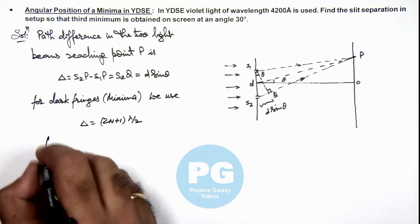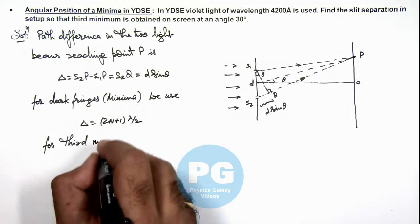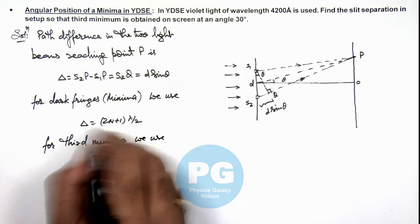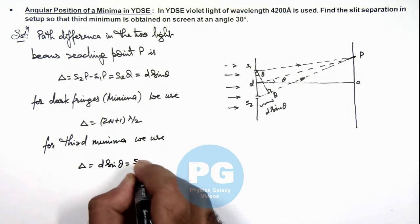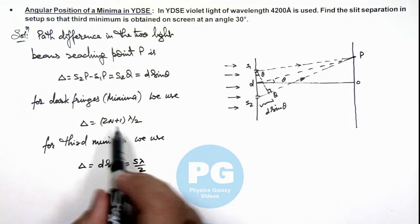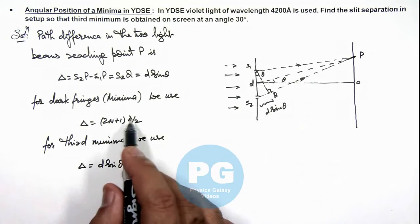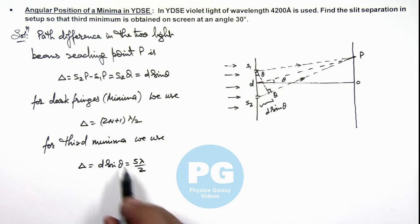And for third minima, we use this delta which is d sine theta should be equal to 5 lambda by 2. As for first minima, n is taken as zero or we take path difference is lambda by 2, then 3 lambda by 2, then for third minima it is 5 lambda by 2.